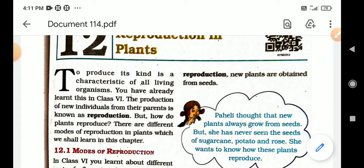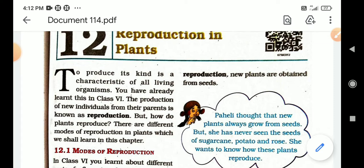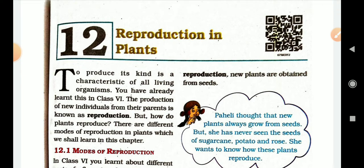Koyi vyekti tete na matapita mathi pacho janmile, tete na punnahutpadan ke evo amahe chhe. But how do plants produce? Chhodh e virite utpan thai chhe — there are different modes of reproduction in plants. There are different modes of reproduction in plants which we shall learn in this chapter.